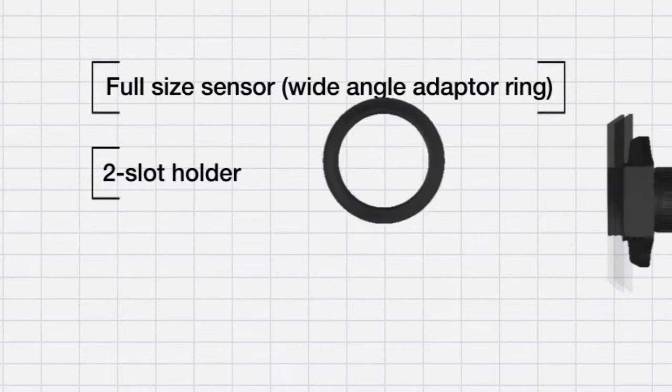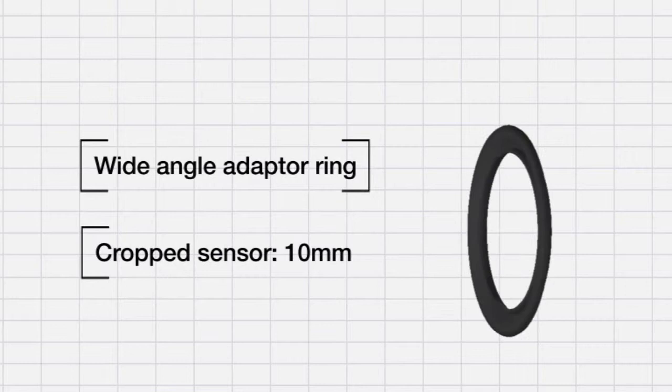Using a full-size sensor and a wide-angle ring, you can use a two-slot holder at a focal length of 17 millimeters without vignetting. Using a cropped sensor, the focal length will be 10 millimeters.